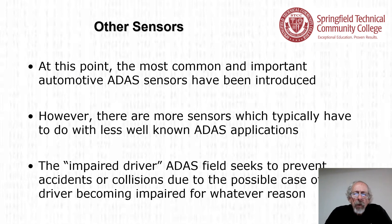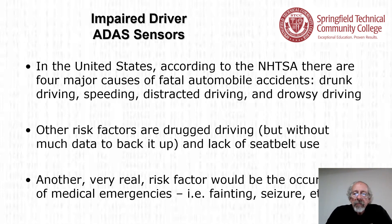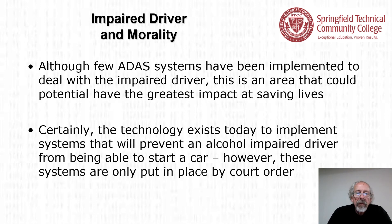The most common important automotive ADAS sensors have been introduced, but there are more sensors for less well-known ADAS applications. The impaired driver ADAS field seeks to prevent accidents due to driver impairment. According to the NHTSA, the four major causes of fatal automobile accidents are drunk driving, speeding, distracted driving, and drowsy driving. Although few ADAS systems have been implemented to deal with the impaired driver, this is an area that could potentially have the greatest impact on saving lives.